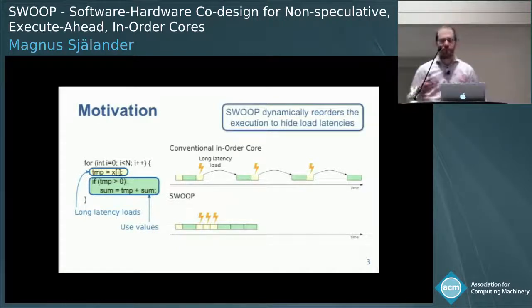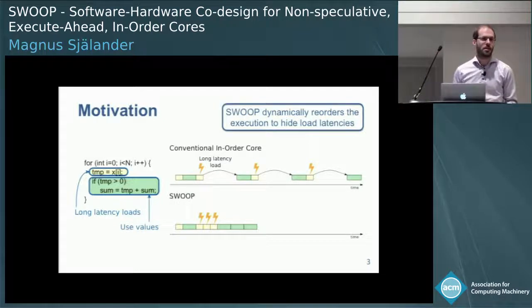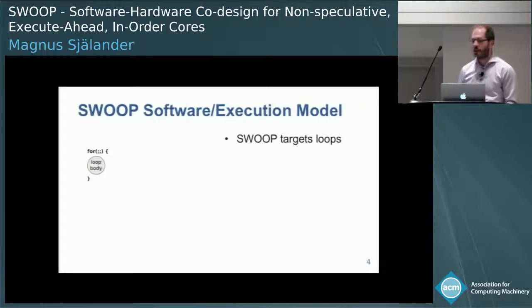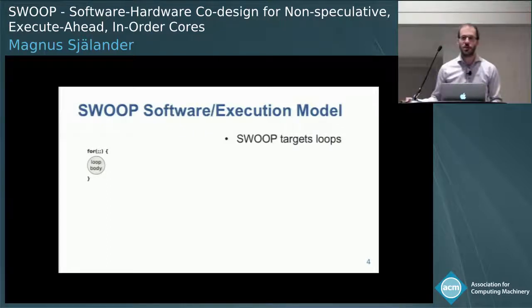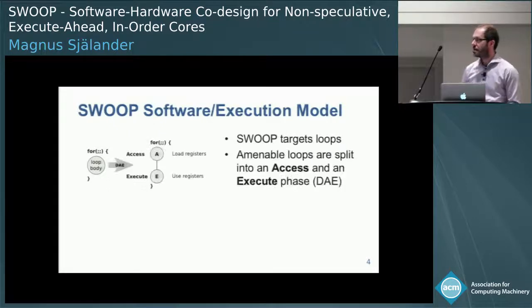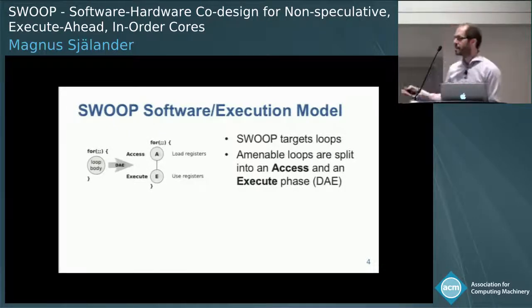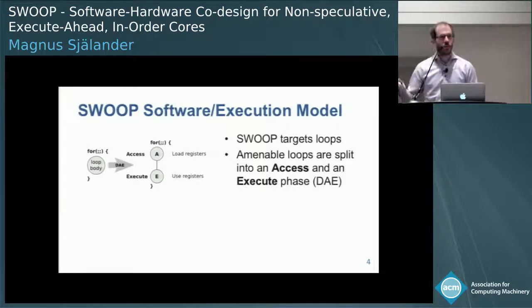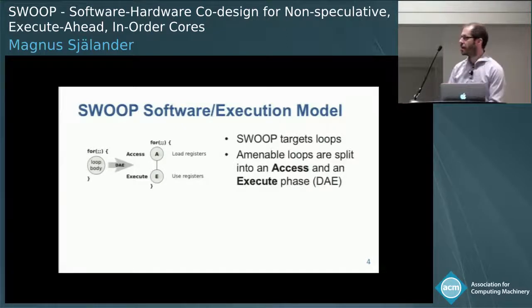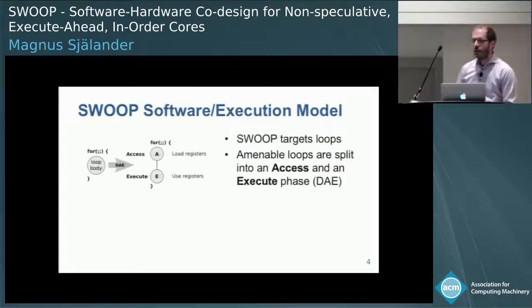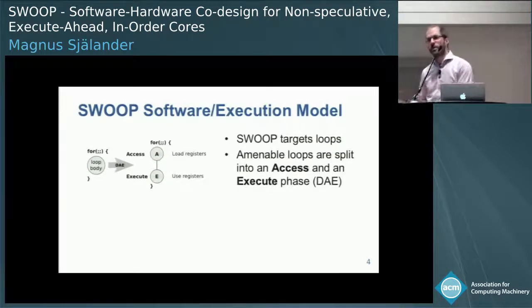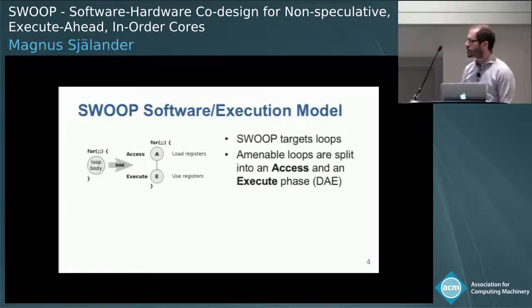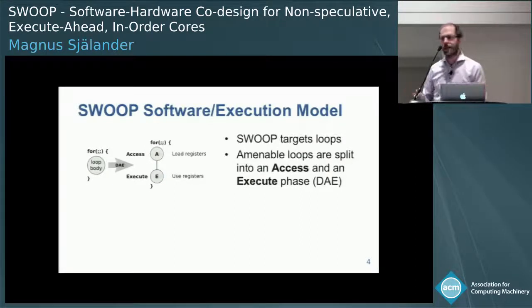Swoop dynamically reorders the execution to hide load latencies. Swoop targets loops — here we have a loop with a loop body. What the compiler does is decouple this into an access phase and an execute phase. In the access phase, we put all the loads and all the instructions needed to compute or execute these loads, like address calculations and potentially control flow. In the execute phase, we sync all the uses of those loads and the compute of them. This is the decoupled access-execute approach that has been done before.